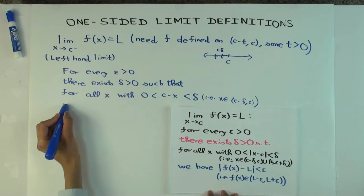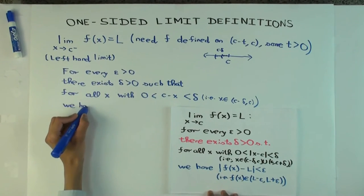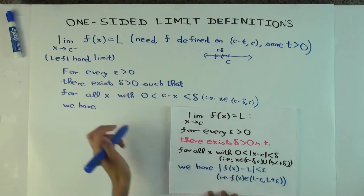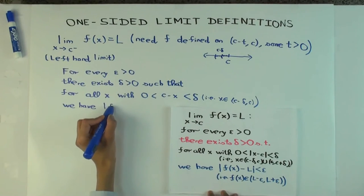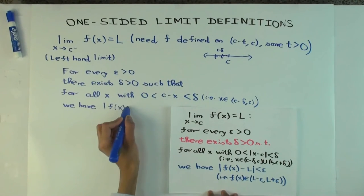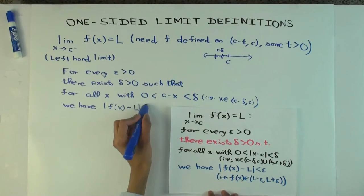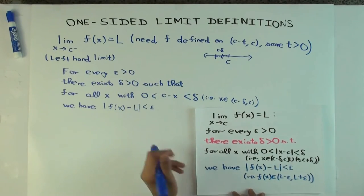What do we have? We have the same thing. So this part doesn't change. F(x) is within epsilon distance of L.